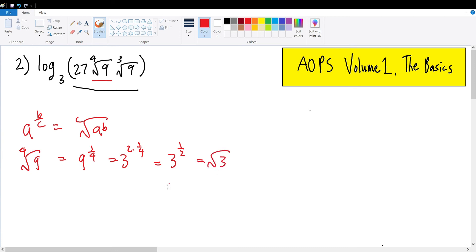Also, the cube root of 9 equals 9 to the 1/3, which equals 3 squared to the 1/3, which equals 3 to the 2/3 power, which equals the cube root of 3 squared, which equals the cube root of 9.